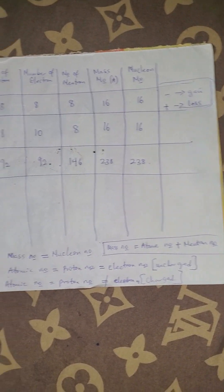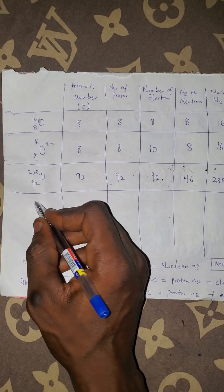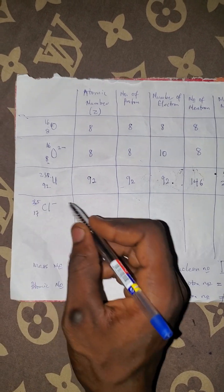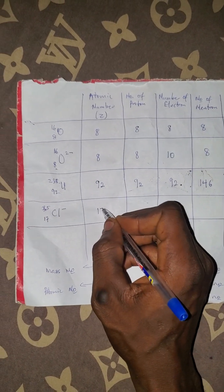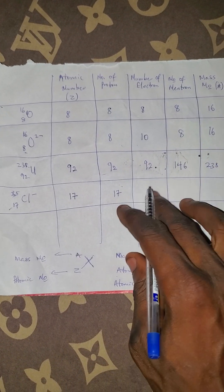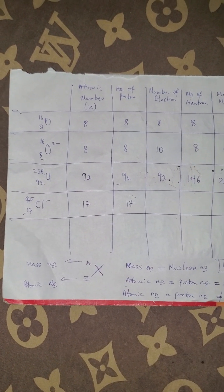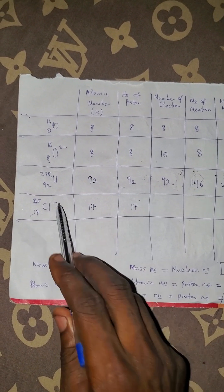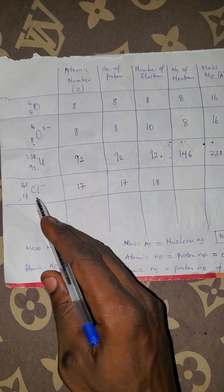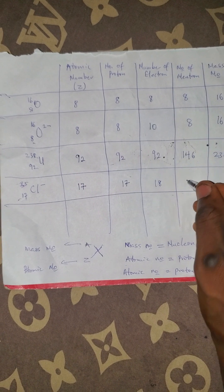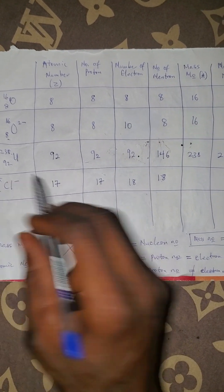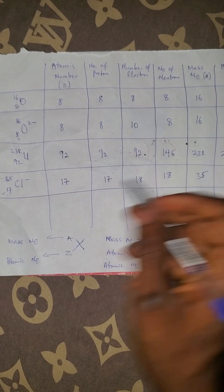Next is chlorine with a 1-minus charge: Cl-35, with atomic number 17 and mass number 35. The atomic number is 17 and the proton number is also 17. The electron number will not be 17 because this one has a charge. Minus means gain, so this atom is going to gain one more electron, making the electron number 18. The neutron number equals 35 minus 17, which is also 18.